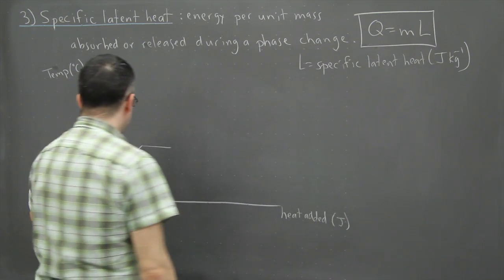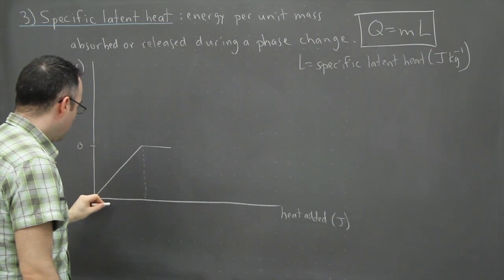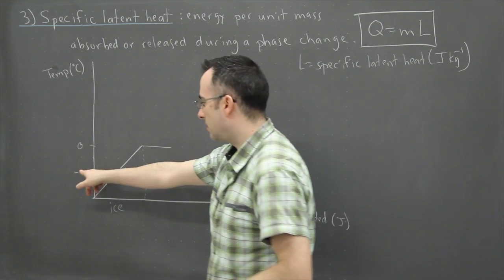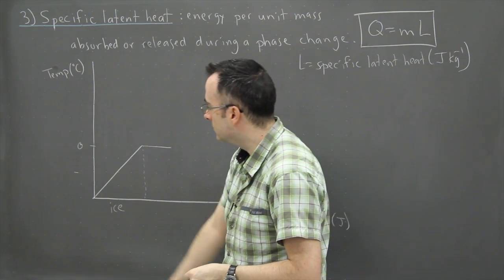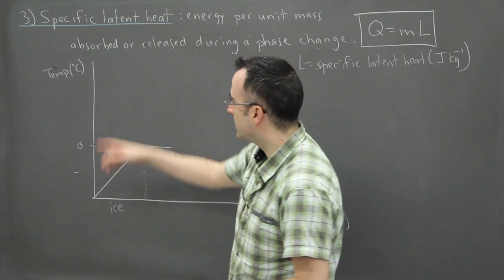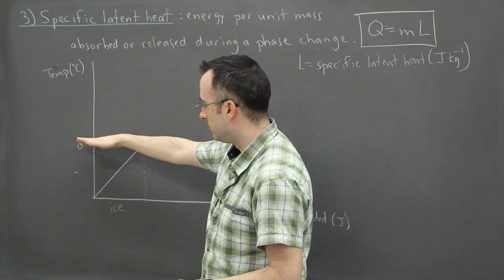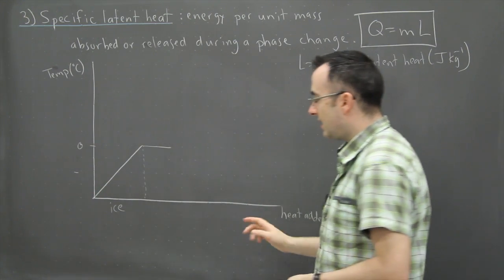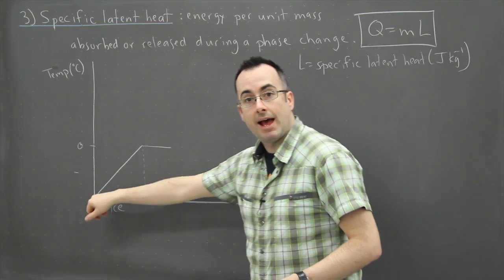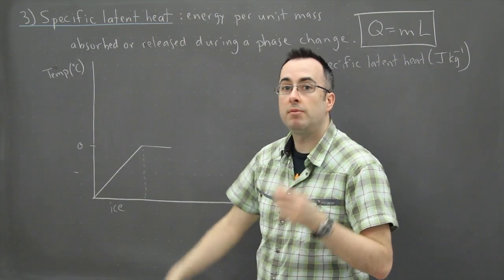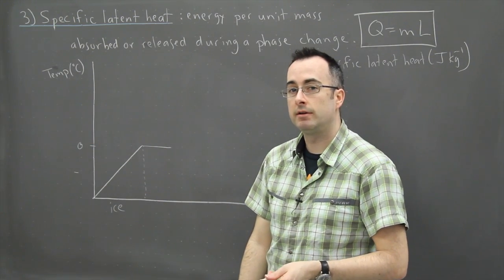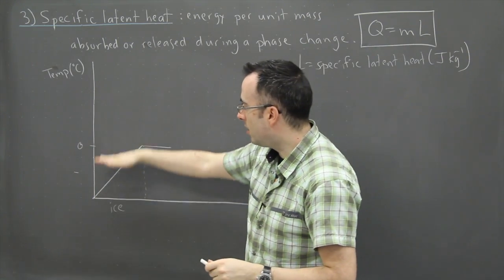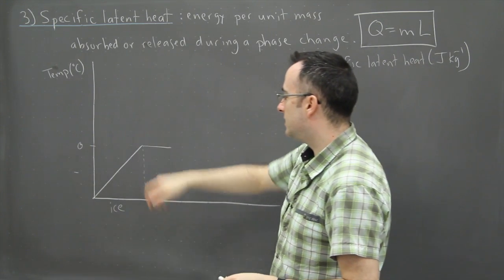So what happens is during this time period right here we have just ice, so this is when it's negative here, so this is some negative temperature. I don't know what it is, negative something degrees Celsius or Kelvin, well it can't be negative Kelvin. In this case if I've got temperature in Celsius and this is zero, this is some negative value. So here it's all pure ice, so as I add energy its temperature can go up, and remember temperature is all about the average kinetic energy.